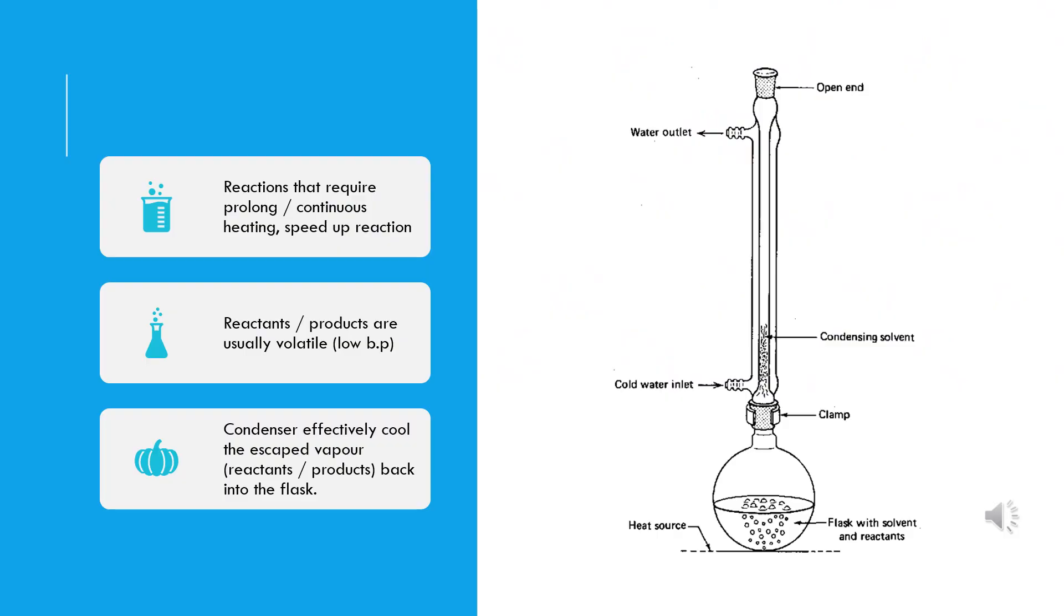A reflux system is used for carrying out reactions which require prolonged, continuous heating. The reactants and products are usually volatile. Therefore, the condenser is attached above the round bottom flask to condense the escaped vapor, which can be either the reactants or products, back into the flask.